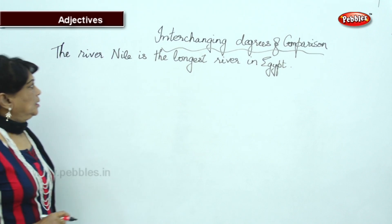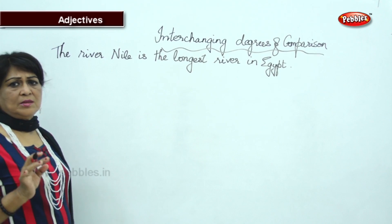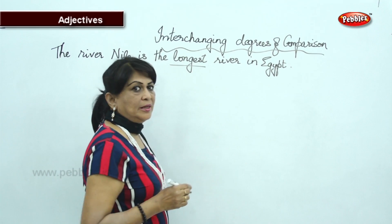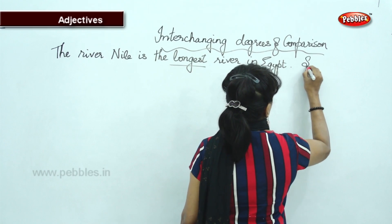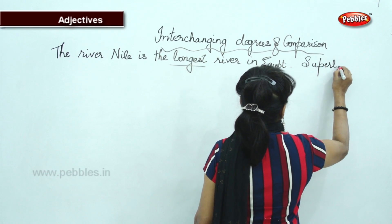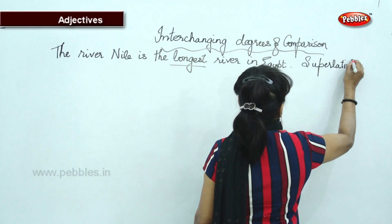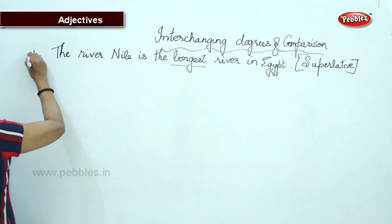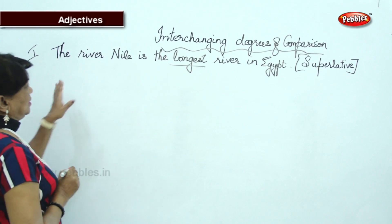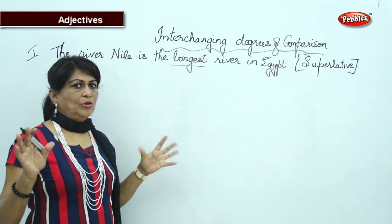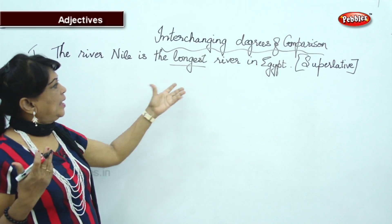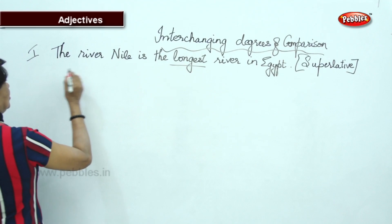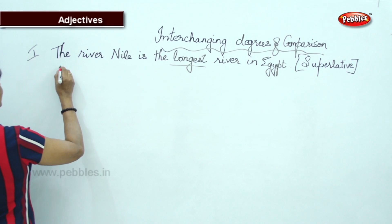The River Nile is the longest river in Egypt — 'the longest.' Now what degree is it? Superlative, isn't it? Now how do you change this? No other river is as long as this river in Egypt — that will be the positive degree.